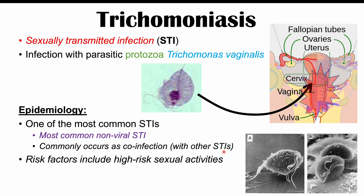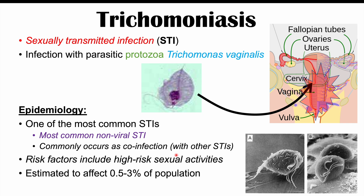The risk factors for getting Trichomonas vaginalis infections include a variety of high-risk sexual activities, such as unprotected sexual activities and multiple sexual partners. The prevalence is estimated to be anywhere from 0.5 to 3% of the general population, though high-risk groups have higher prevalences, and even these numbers are likely underreported.